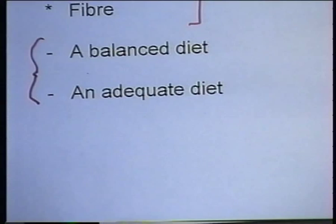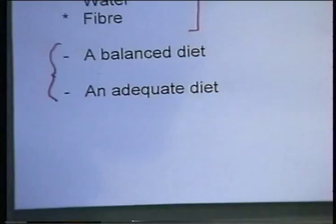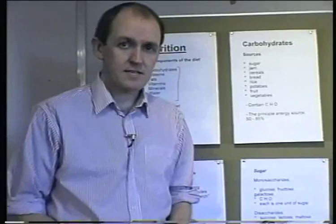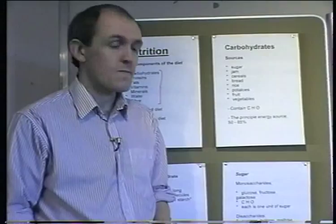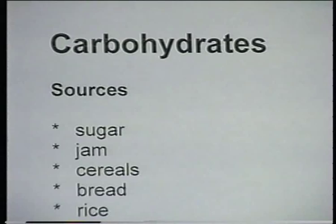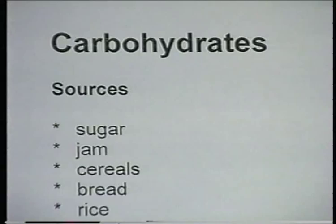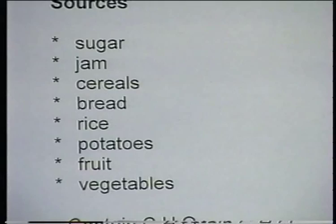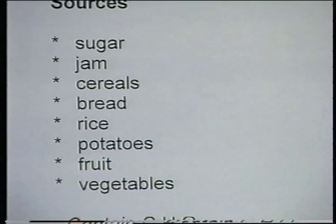We're now going to look at the seven food groups that comprise the diet, looking at where we get them from and why they're needed to maintain health. The first food group is carbohydrates. These are found in sweet foods and starchy foods — for example, sugar. Sugar is a type of carbohydrate, and jam contains carbohydrate sugars from fruits and from added sugar.